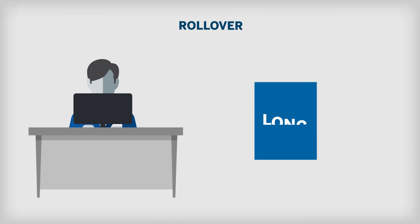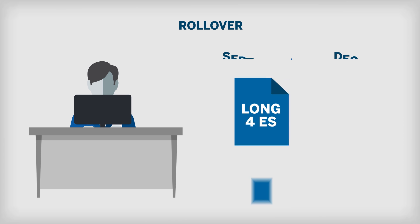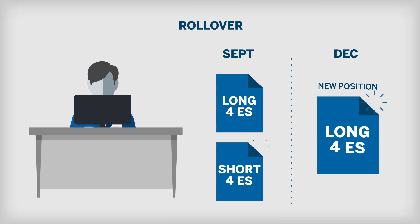For example, a trader who is long four contracts of the E-mini S&P 500 expiring in September will simultaneously sell four September ES contracts and buy four December ES contracts.